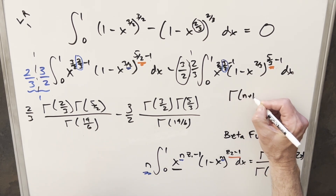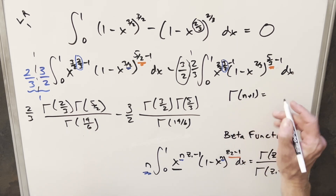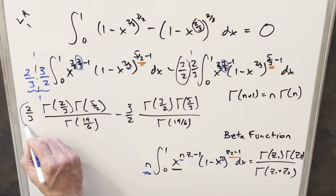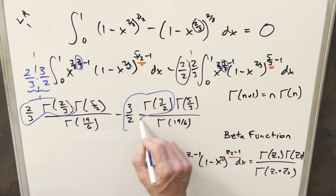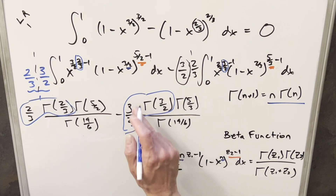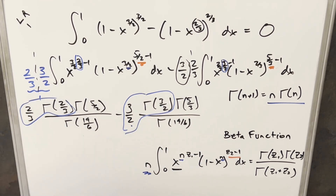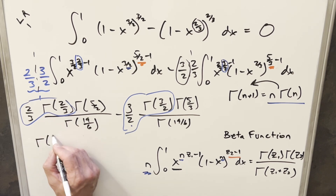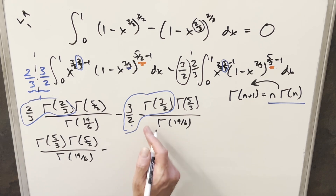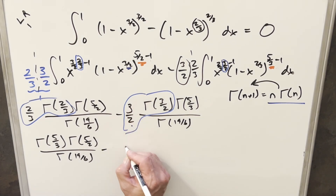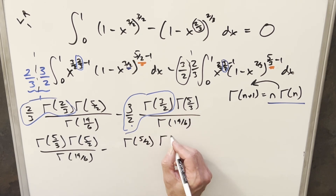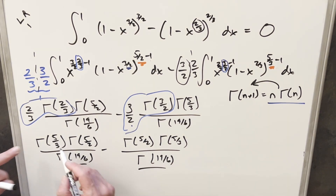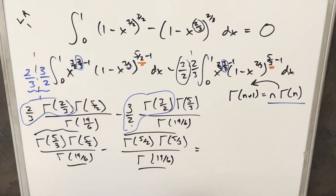To simplify, I use the formula gamma(n+1) = n · gamma(n). Looking at the expressions, I have gamma(5/3) where n equals two-thirds, so I can rewrite gamma(5/3) as (2/3)·gamma(2/3). Similarly, gamma(5/2) = (3/2)·gamma(3/2). Substituting these back in, the first term becomes (2/3)·(2/3)·gamma(2/3)·gamma(5/3) / gamma(19/6) and the second becomes (3/2)·gamma(3/2)·gamma(5/3) / gamma(19/6). These two expressions are actually the same thing in a different order, so when you subtract them you get our final answer of zero.